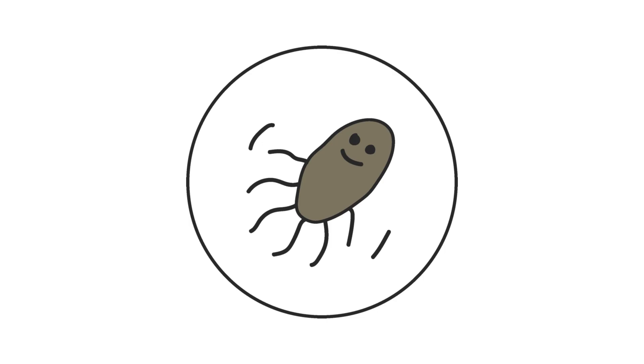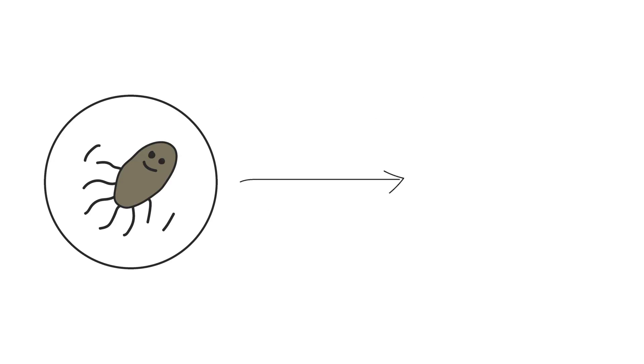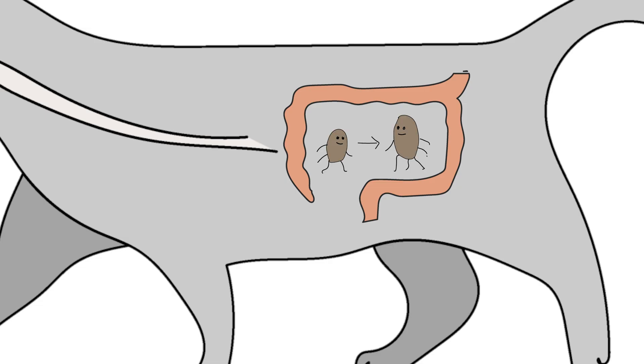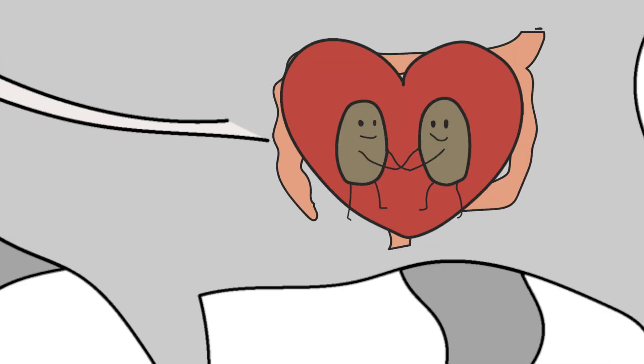Toxoplasma Gandhi, toxo for friends, is a microscopic parasite. Its life goal? Very simple. Reach the intestines of a cat. Why? It's the only place where it can reproduce sexually. Nothing more romantic than that.